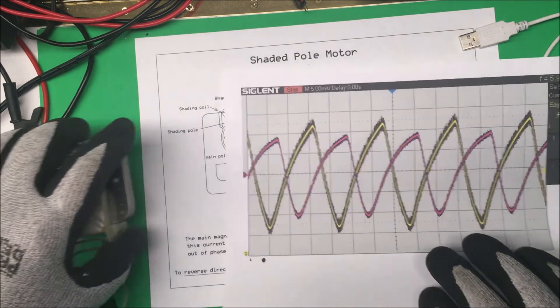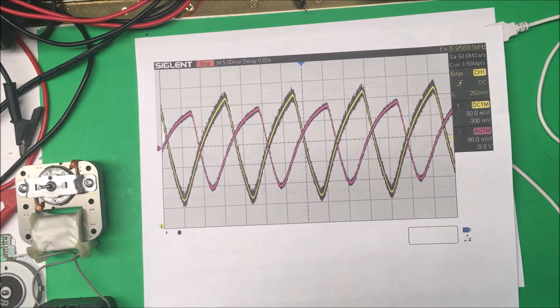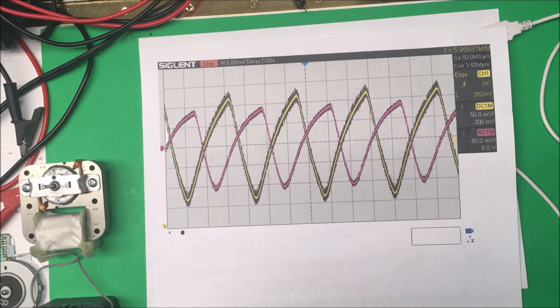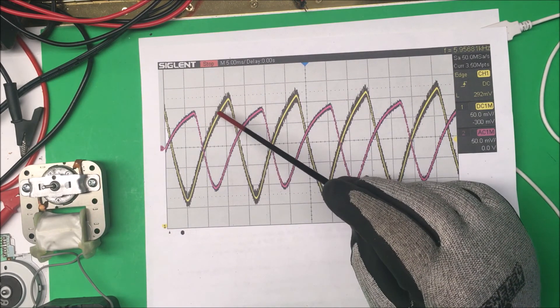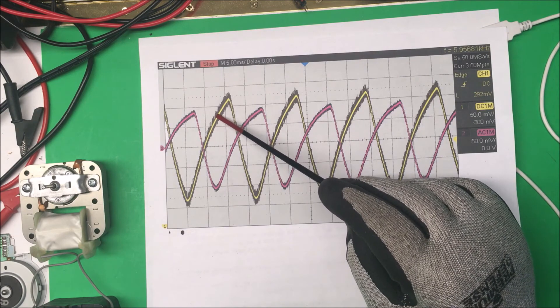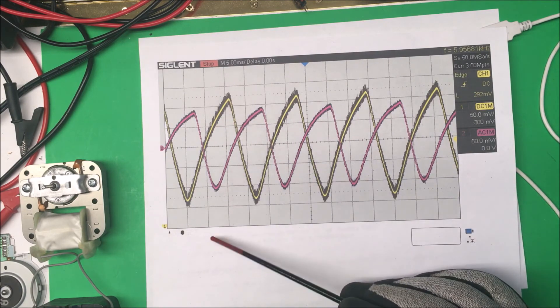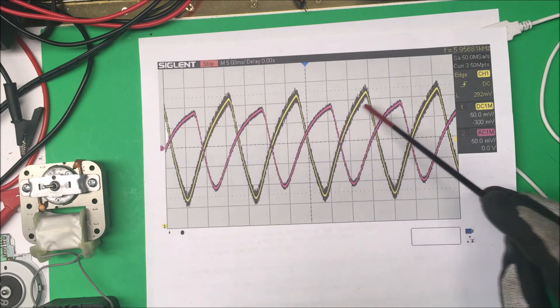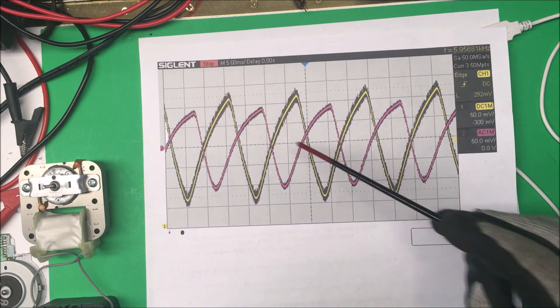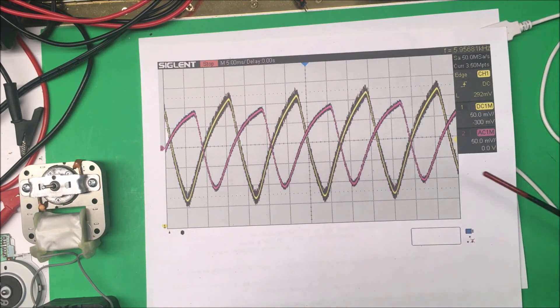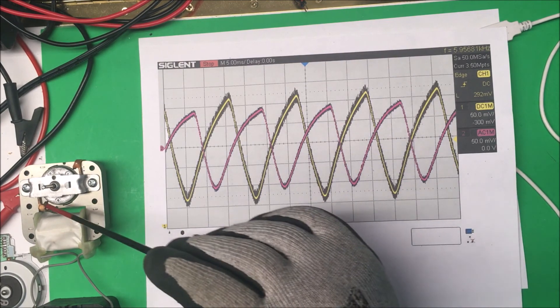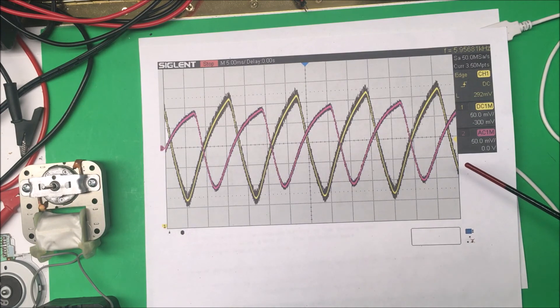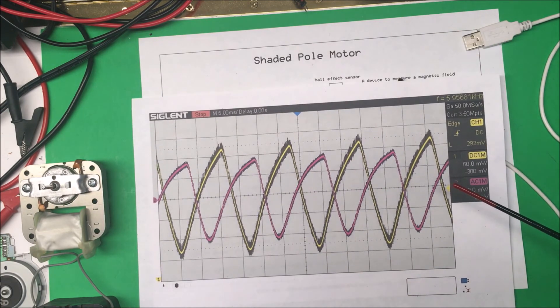And here's what it looks like on the oscilloscope. So this one happens to be your main pole, and this is your shading pole here. You can see that they're 90 degrees out from each other, so they can create a magnetic torque on the motor and spin up the fan.